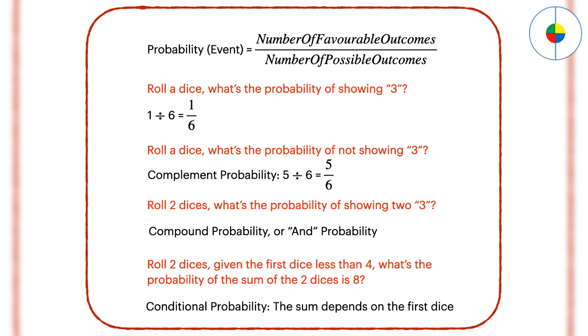Conditional probability refers to the chances that some outcome occurs given that another event has also occurred. It is often stated as the probability of B given A, where the probability of B depends on that of A happening.